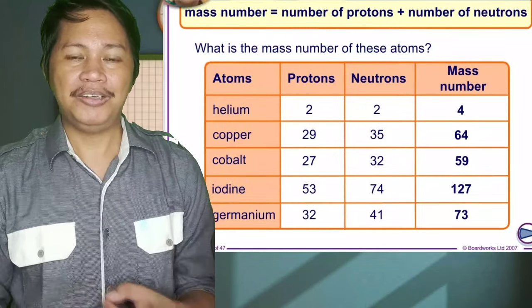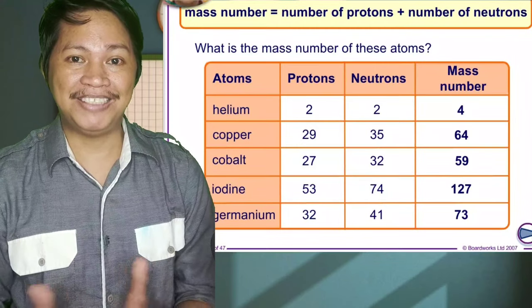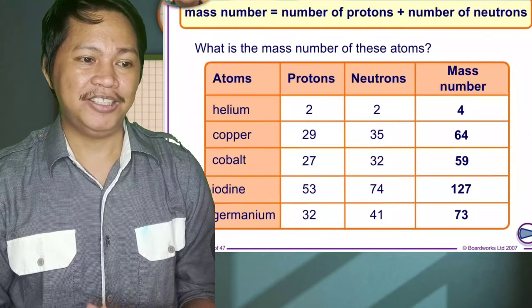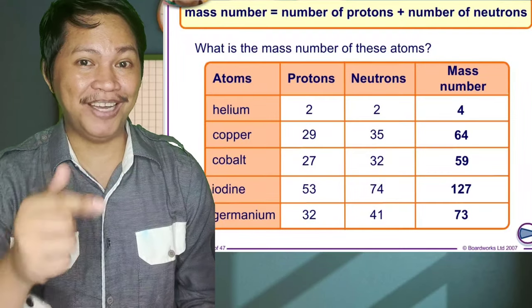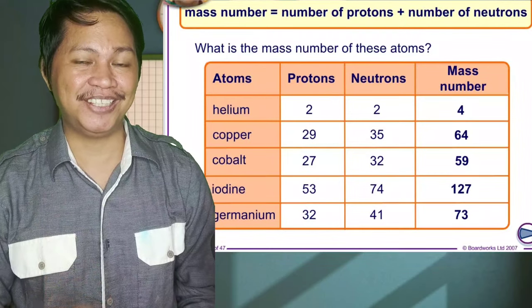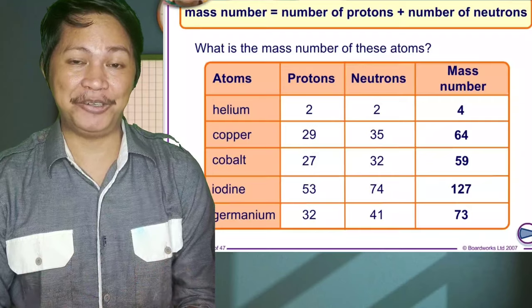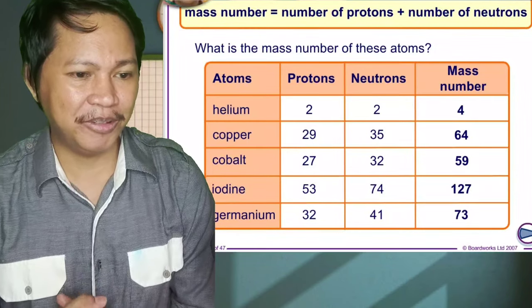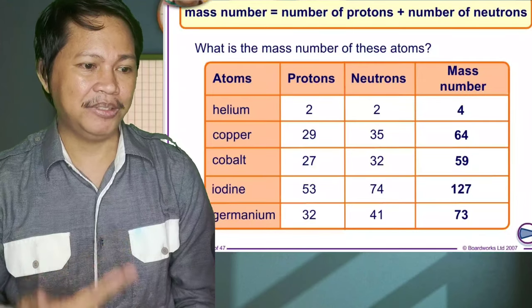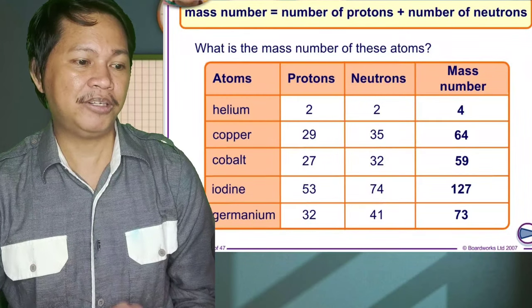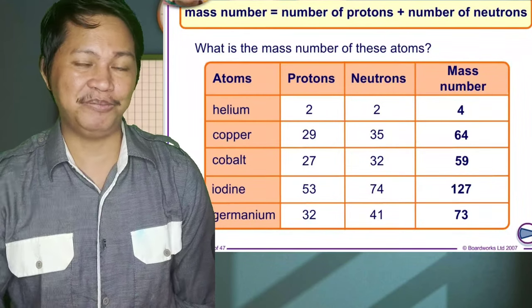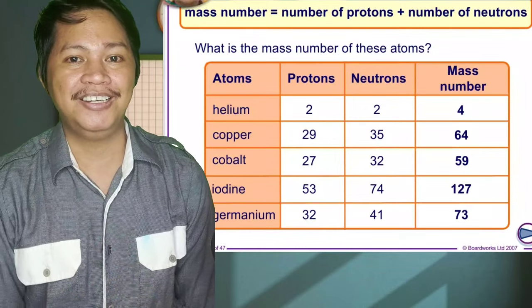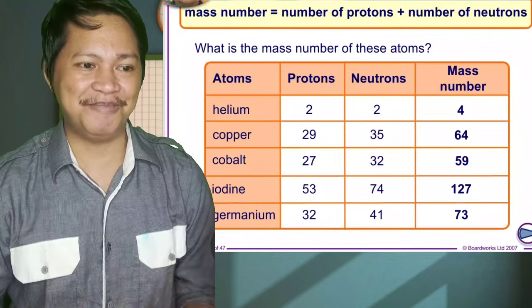Now, how do we get or how do you calculate mass number? Simply, you just have to add number of protons plus number of neutrons. Again, P plus N, or protons plus neutrons. So you have also here in the table: helium, copper, cobalt, iodine, and germanium. So by looking at the table, then you will learn how to get the mass number.